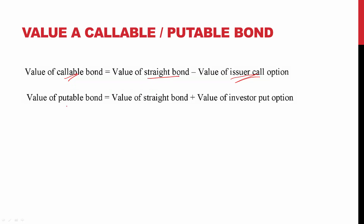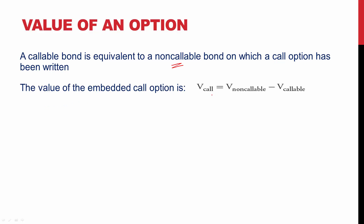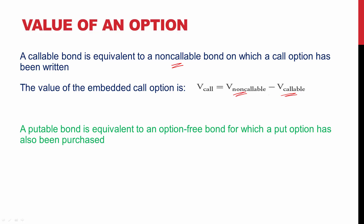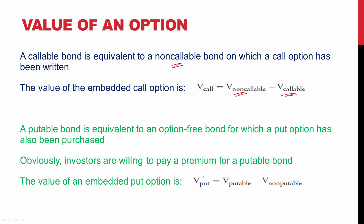Putable bonds are investor options — they favor the investor — and are exercised when interest rates go up. Because the put option favors the investor, investors must pay extra to buy a putable bond. Therefore, the value of a putable bond is always more than that of a straight bond, greater by the value of the put option. A callable bond is equivalent to a non-callable bond on which a call option has been written; the value of the embedded call option equals the non-callable bond value minus the callable bond value. A putable bond is equivalent to an option-free bond for which a put option has been purchased; investors pay a premium and the embedded put option value equals the putable bond value minus the non-putable bond value.